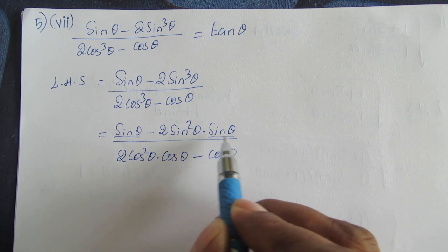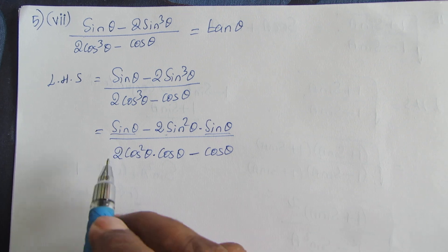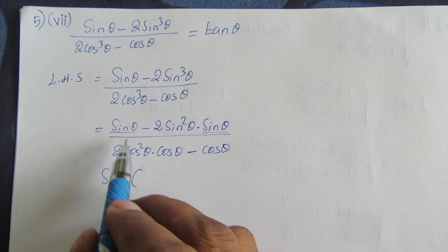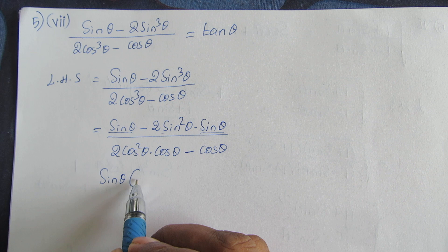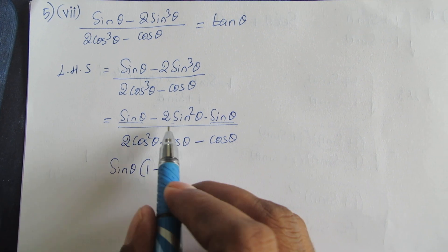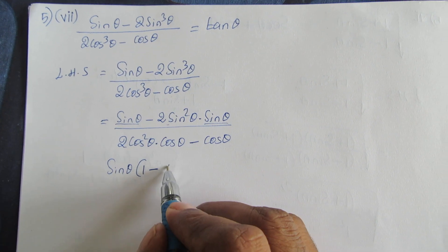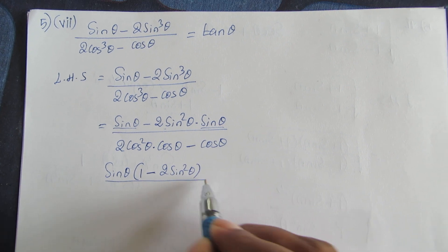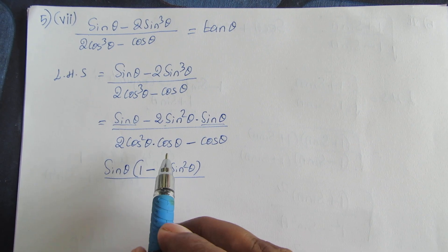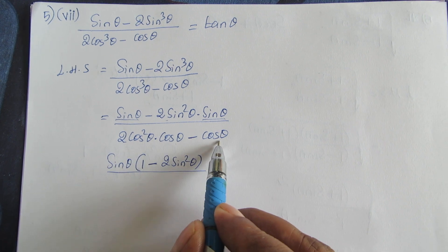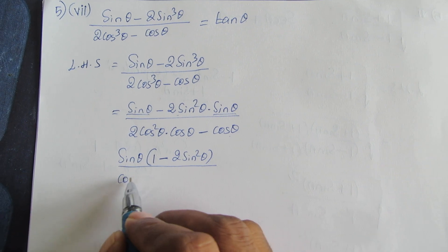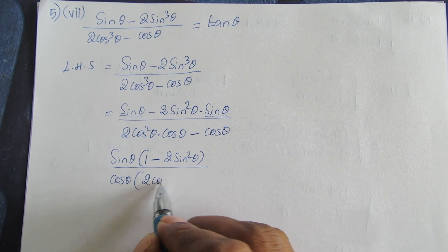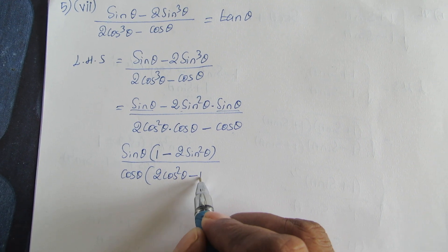Now sin theta is common in the numerator, so we take out sin theta: inside we have 1 minus 2 sin square theta. In the denominator, cos theta is common, so we take out cos theta: inside we have 2 cos square theta minus 1.